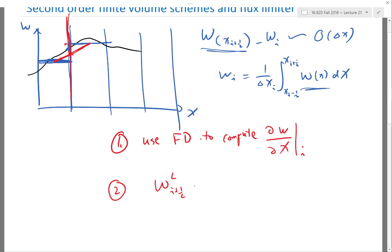Second, I'm going to be saying that my W at i+1/2 left, right on the left of the interface, I'm going to approximate it as W_i plus the derivative of W at i times half of delta X_i.